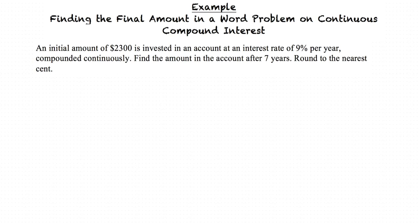An initial amount of $2,300 is invested in an account at an interest rate of 9% per year compounded continuously. Find the amount in the account after 7 years.